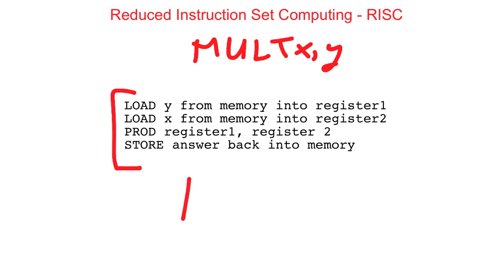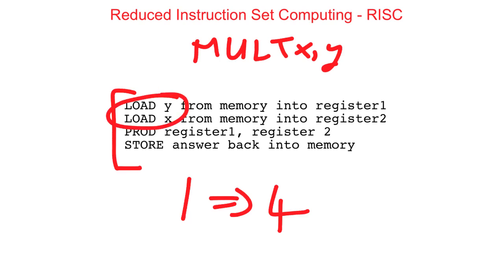This is an increase of one instruction to four. However, the upside is that each instruction can be carried out in a single machine cycle. A major benefit of this reduced instruction set computing architecture is that a system called pipelining can be used to speed up processing. With pipelining, the first two instructions to load x and load y could be carried out at the same time, as they don't depend on each other. This can only happen with a RISC architecture, as all instructions now take just one machine cycle.